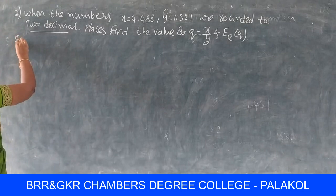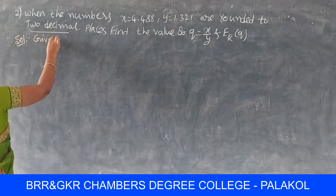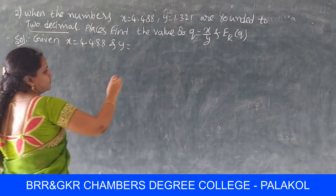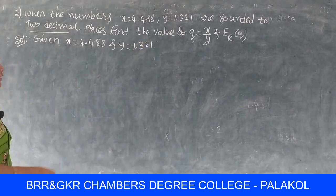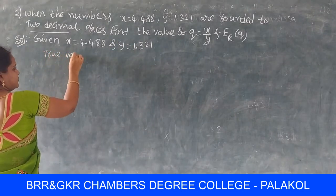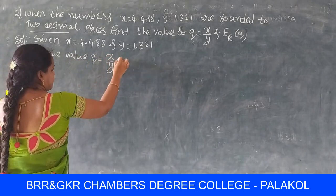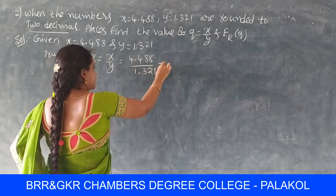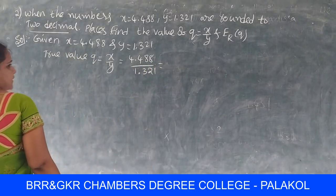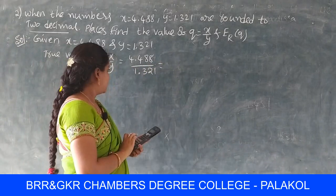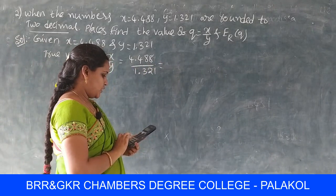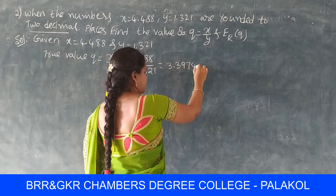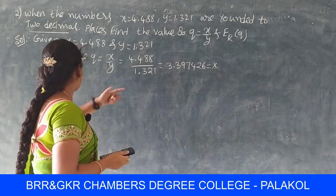Solution: given x = 4.488 and y = 1.321. The true value Q = x/y = 4.488 ÷ 1.321. Using the scientific calculator (Casio), 4.488 ÷ 1.321 = 3.397426. This is the true value, capital X.